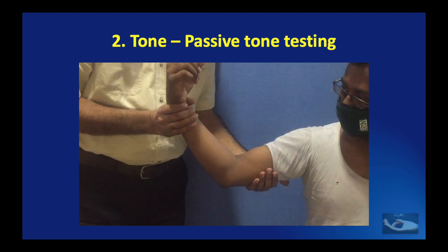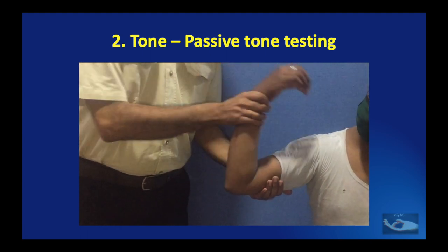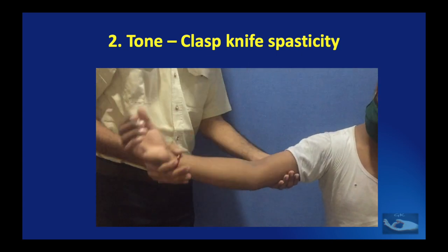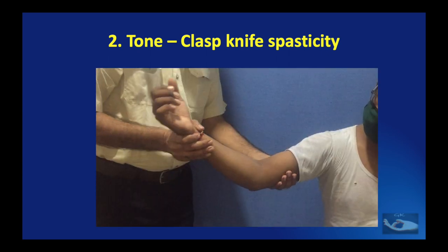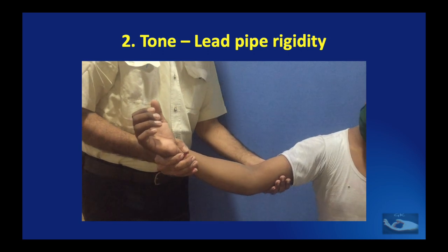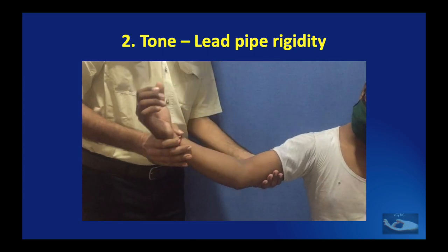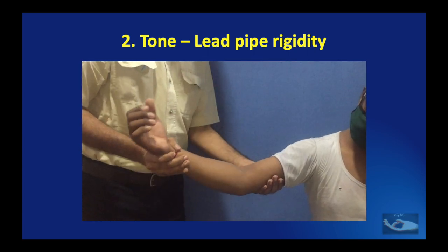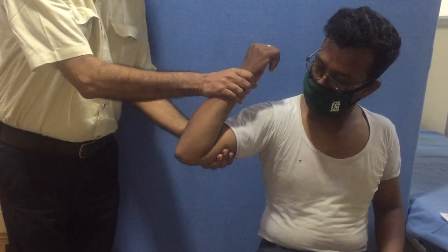To demonstrate passive tone testing, elbow flexion is shown. When the elbow is passively flexed and extended, the examiner's hand should palpate the triceps. In upper motor neuron lesions involving the pyramidal tract, there is increased tone initially that relaxes once resistance is overcome — known as clasp knife spasticity. In conditions like Parkinsonism or dementia, there is lead pipe rigidity sustaining throughout the range of motion. In extrapyramidal upper motor neuron lesions, cogwheel rigidity occurs — alternating relaxation and resistance throughout the movement.